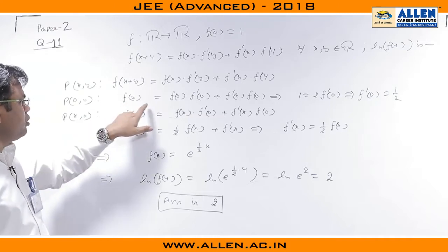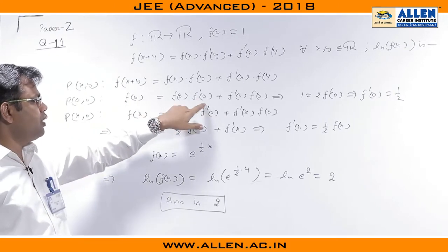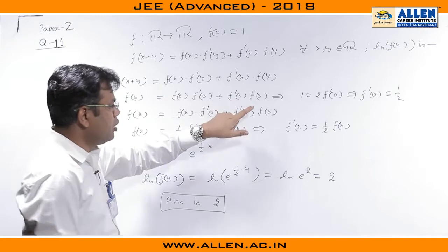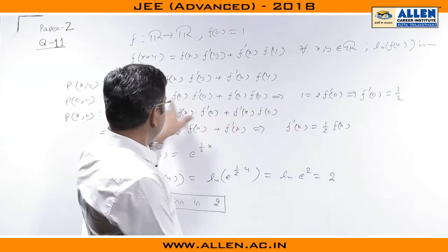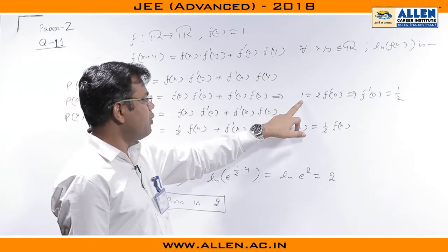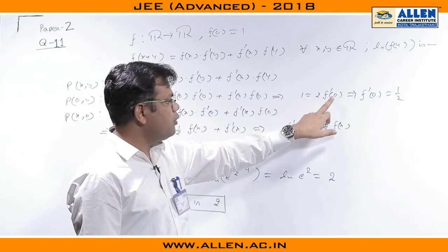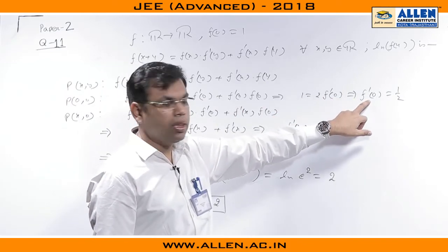If I plug x and y both 0, we get f(0) = f(0)f'(0) + f'(0)f(0). If I use f(0) equal to 1, the left hand side will become 1 and right hand side will become 2f'(0). From there I can calculate f'(0) is 1/2.